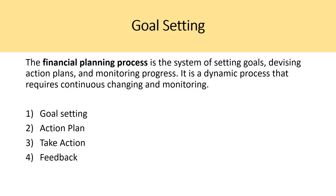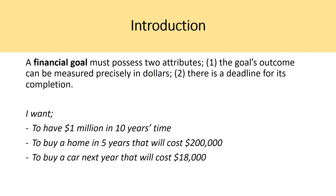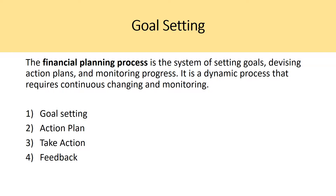The financial planning process is the system of setting those financial goals, devising action plans to get to them, and monitoring their progress. It is a dynamic process that requires continuous changing and monitoring, which is done in step four, the feedback process. The four steps are: one, goal setting; two, build and devise an action plan to achieve those goals within those deadlines; three, implement that plan; and four, continuously update and monitor to see how financial markets change and how that impacts your overall trajectory.